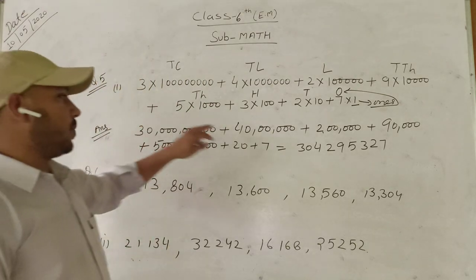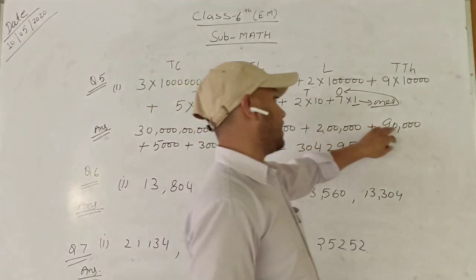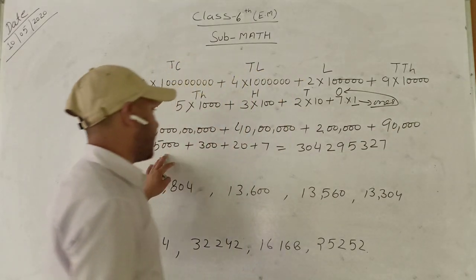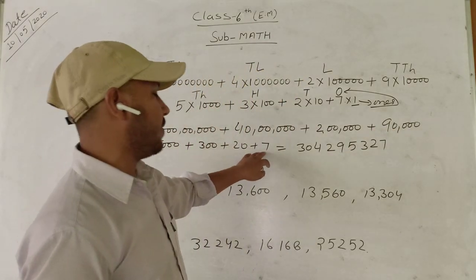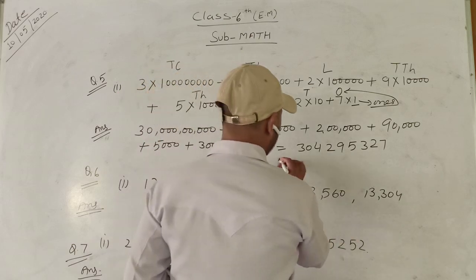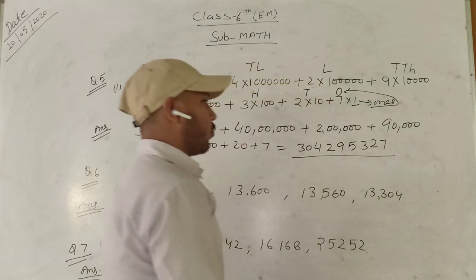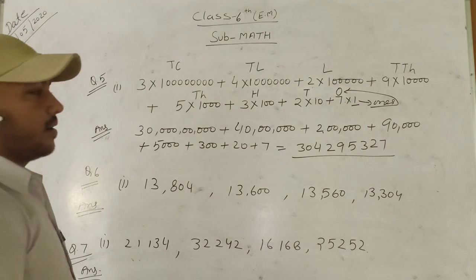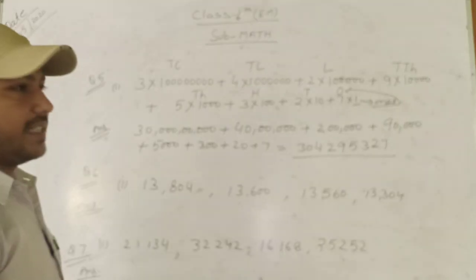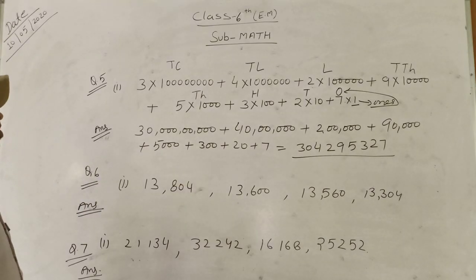So: 30 crore plus 40 lakhs plus 2 lakhs plus 90,000 plus 5,000 plus 300 plus 20 plus 7 is equal to 30 crore 42 lakhs 95,327. This is the answer of part 1 of question number 5.